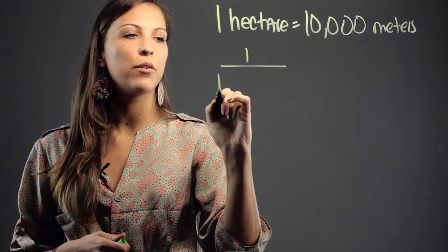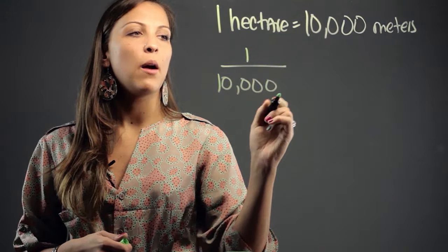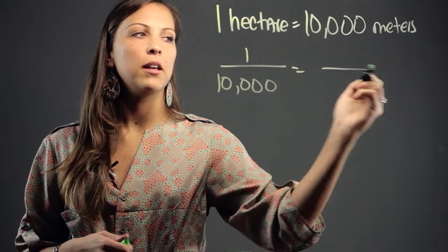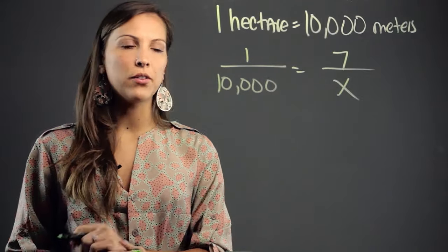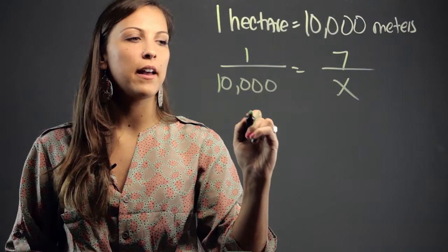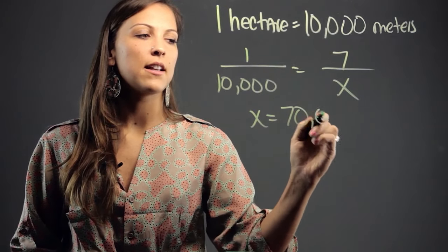and set up a proportion, or you could just multiply. We say if one hectare is 10,000 meters, then 7 hectares are how many meters. You cross multiply and get x equals 70,000.